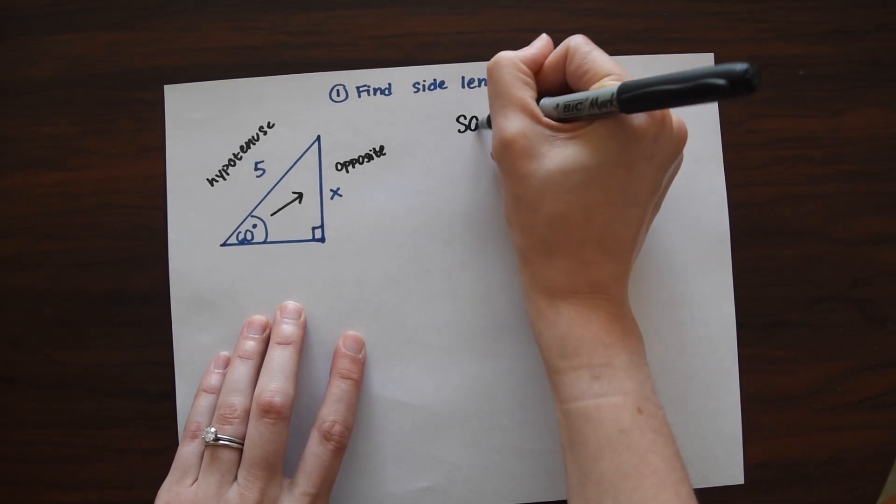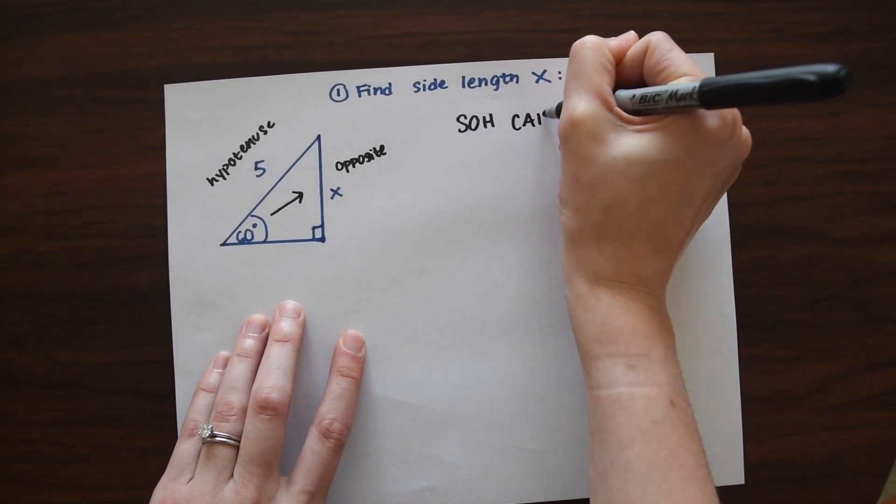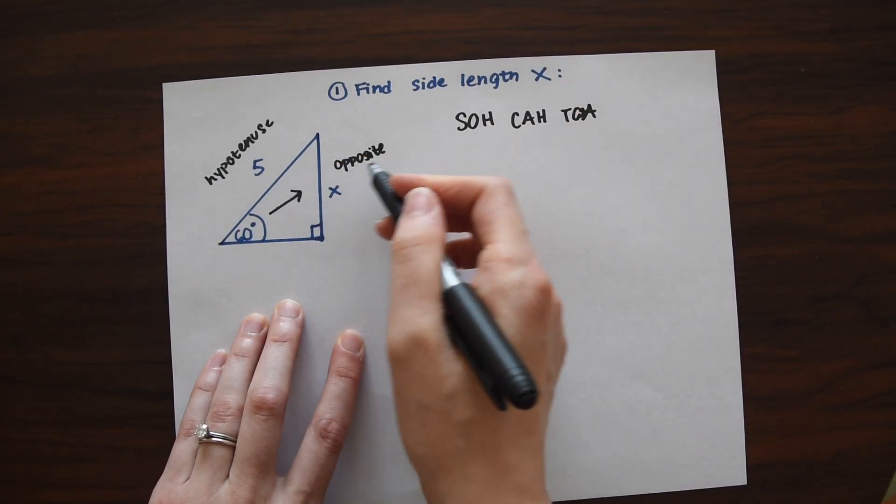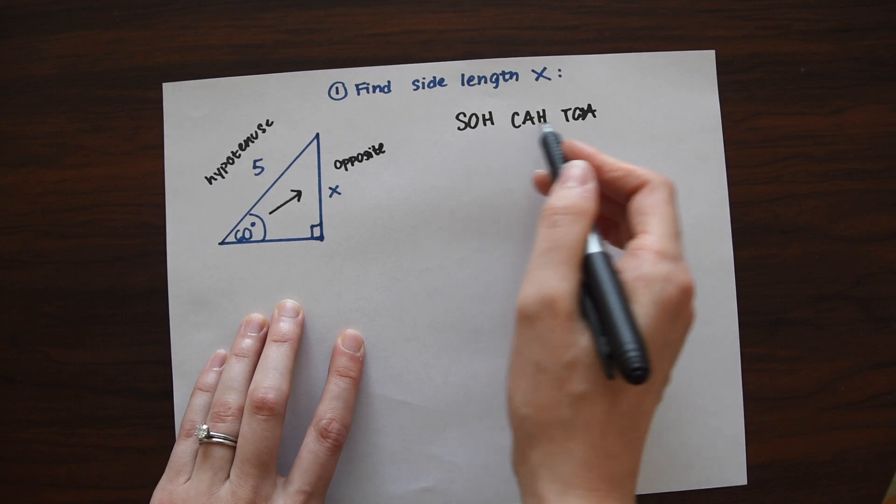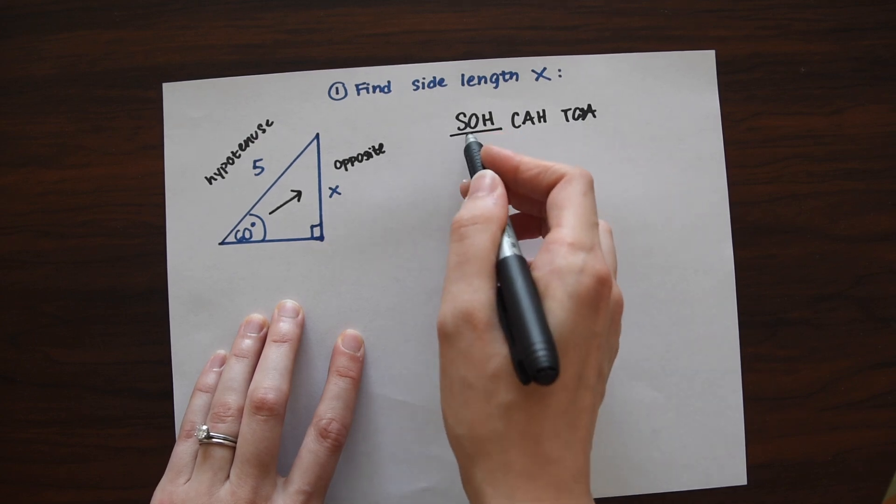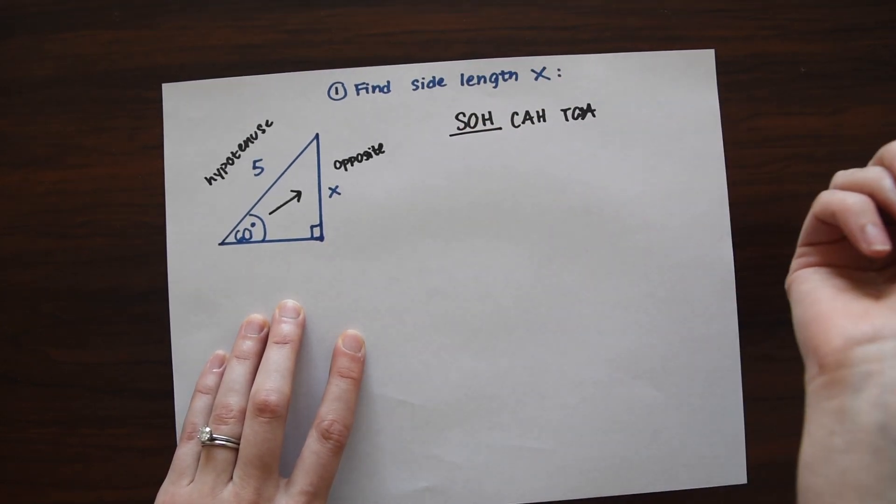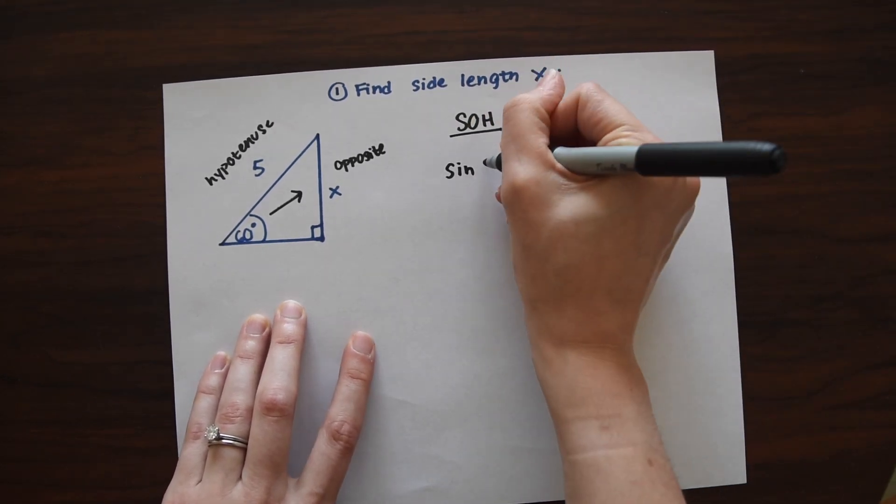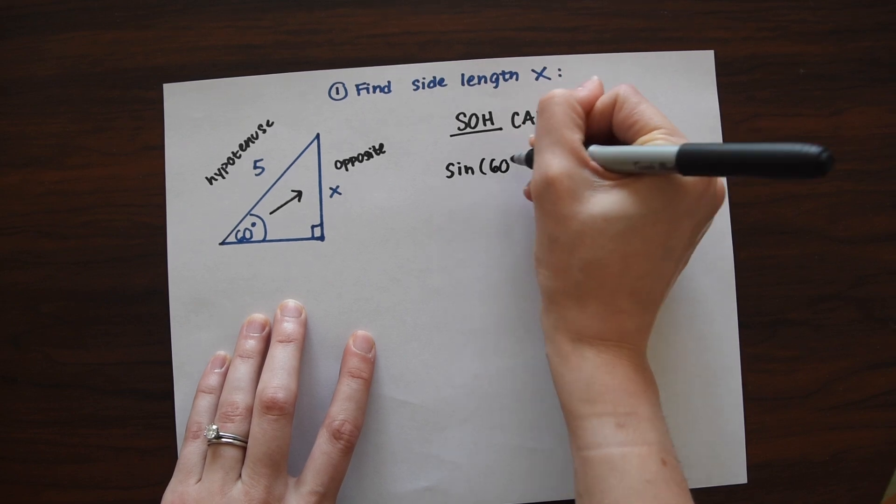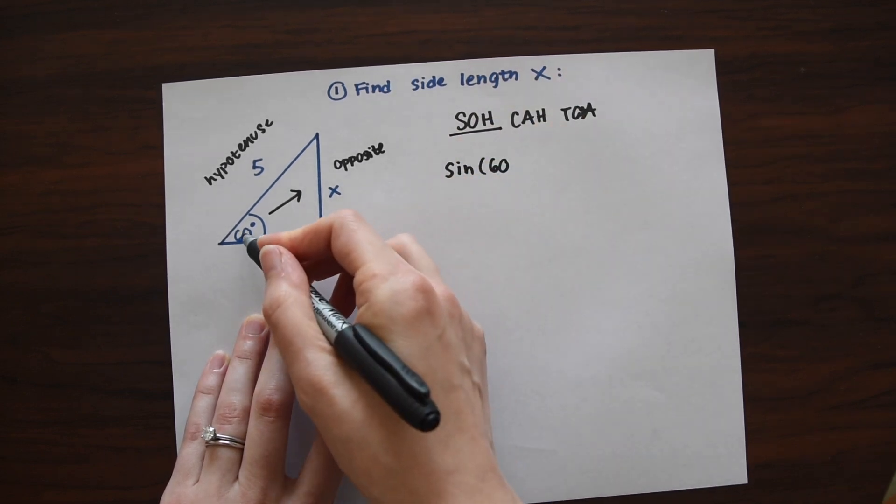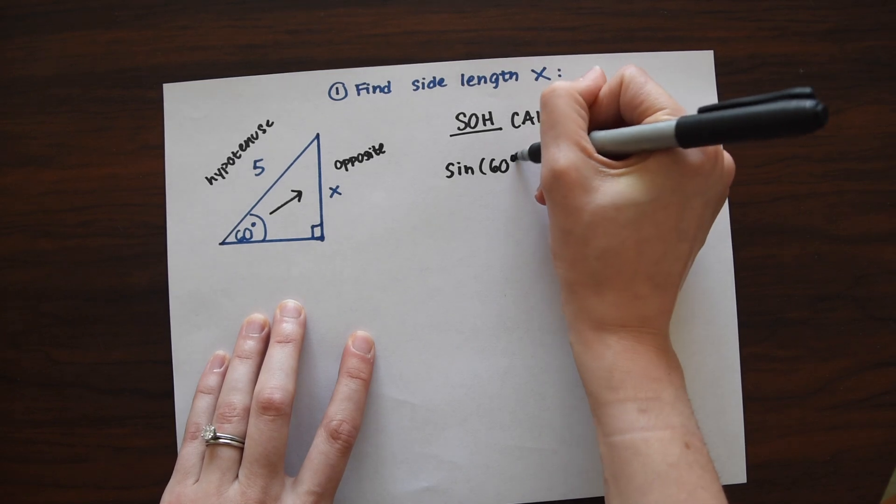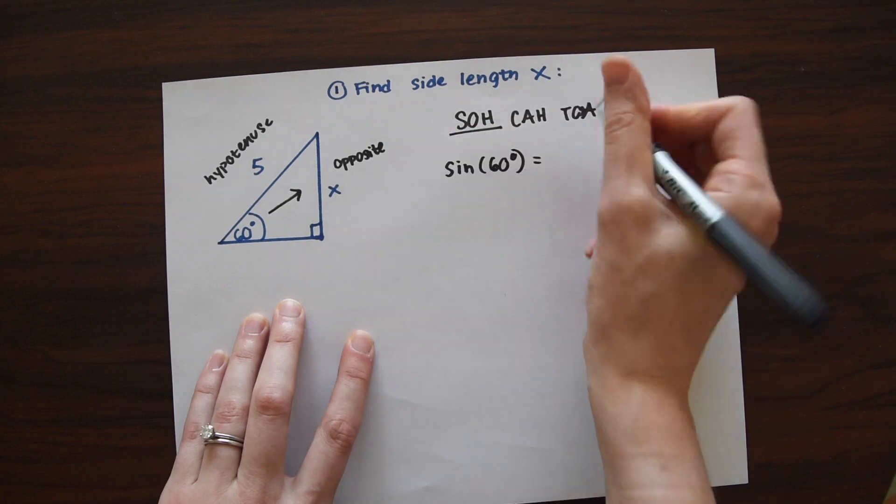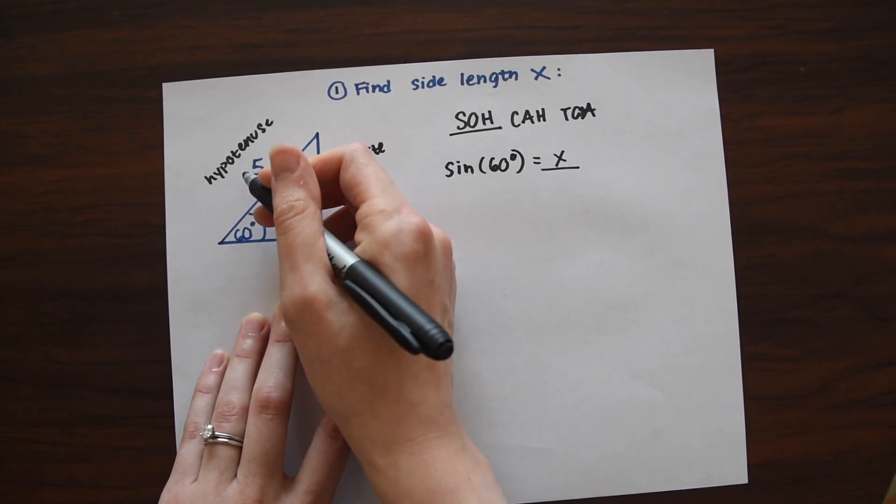So if you write out SOHCAHTOA, we want to be looking for something that has the hypotenuse and the opposite. So which of these have the hypotenuse and the opposite? It's sine. So now we can write a proportion that lets us find this. So if you go sine of 60 degrees, so just using the angle that we're given here, sine of 60 degrees equals opposite over hypotenuse. So opposite X over hypotenuse 5.